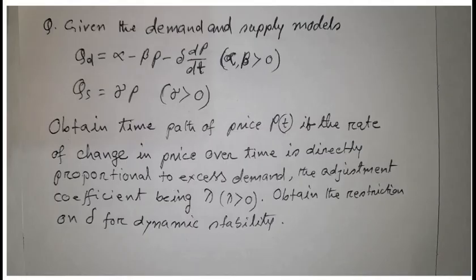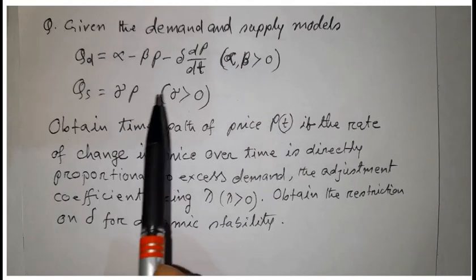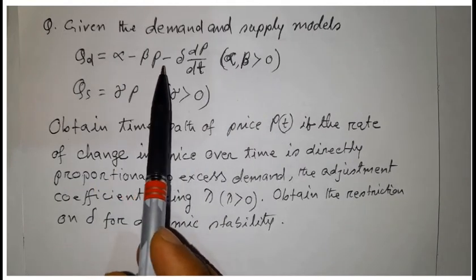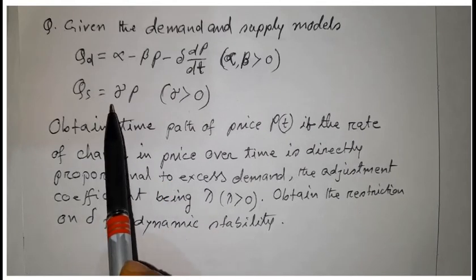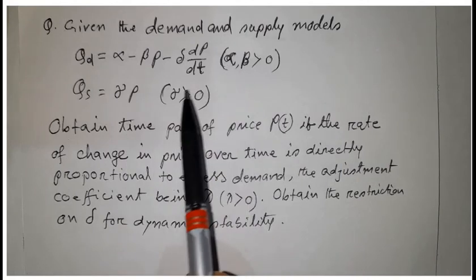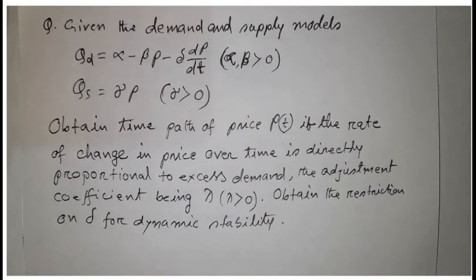Hello viewers. In this video we obtain the time path of price P(t) of the demand and supply model. Q_D is equal to alpha minus beta·P minus delta·(dP/dt), and Q_S is equal to gamma·P, where alpha, beta, and gamma are greater than zero. We also explain the dynamic stability of the time path of price P(t).